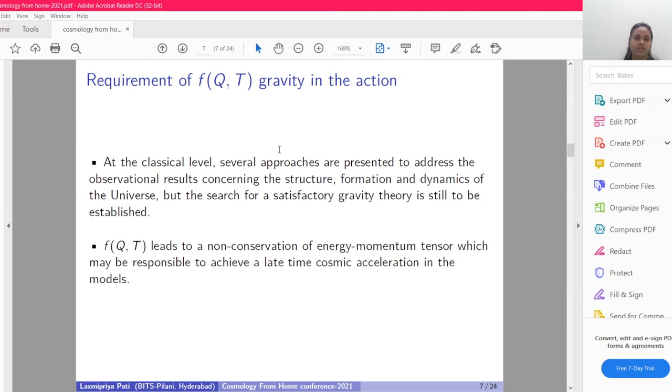At the classical level, several approaches are presented to address the observational results concerning the structure, formation, and dynamics of the universe. But the search is ongoing to find a good extended theory of gravity. f(Q,T) leads to a non-conservation of energy momentum tensor, which may be responsible to achieve late-time cosmic acceleration in the models.